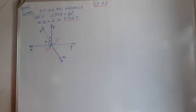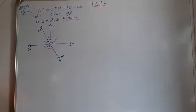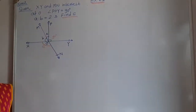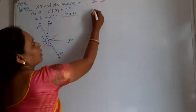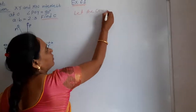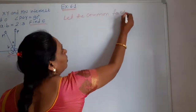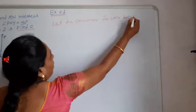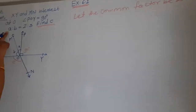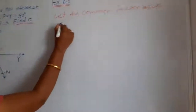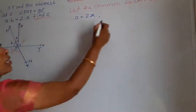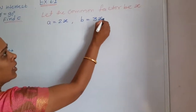Now here the ratio is given, and if for any terms a ratio is given, at that time you have to suppose the common factor between that ratio and let that common factor be X. If X is the common factor between A and B, then value of A means 2 into that common factor, so A equals 2X. Value of B is 3 into that common factor, means B equals 3X.